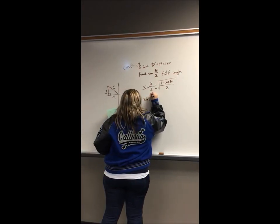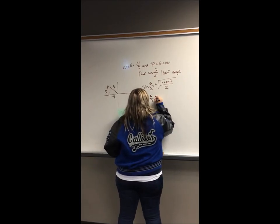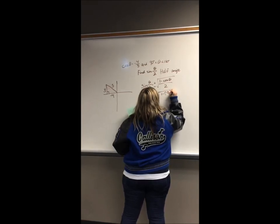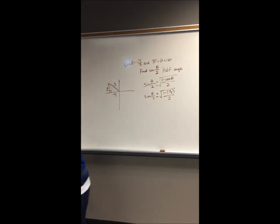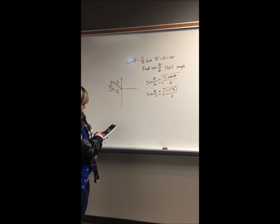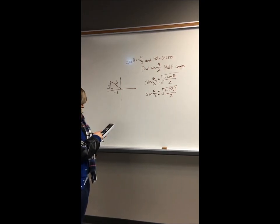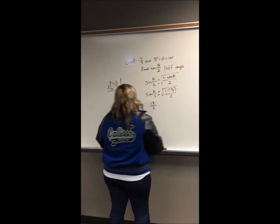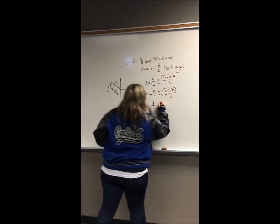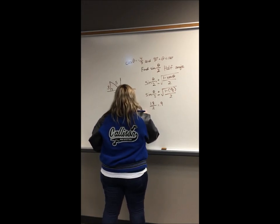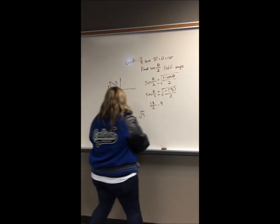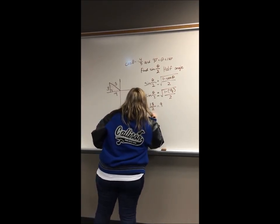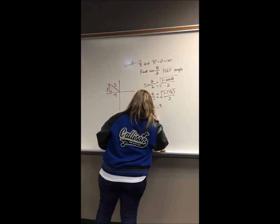Plugging in what we know, it's going to be 1 minus negative 4 over 5, divided by 2. So 1 minus negative 4 over 5 is going to equal 1.8 divided by 2, which equals 0.9. We'll square root that, and putting it into a fraction, that's going to equal the square root of 9 over 10.